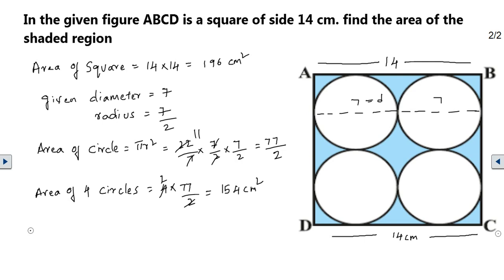So 4 times into 77 divided by 2, 2 into 77 gives me 154 centimeter square.